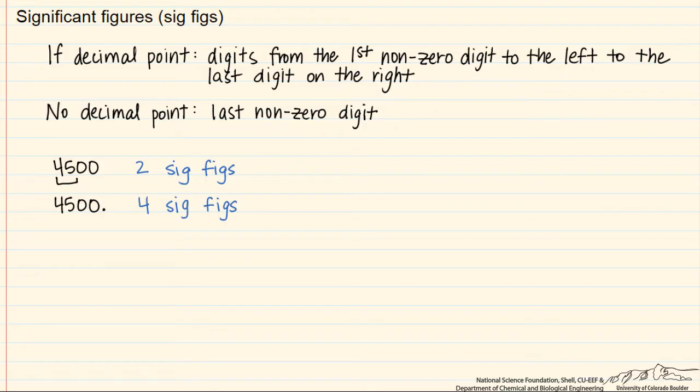Now we write it like this, 0.045. So here we have two significant figures. However, if we put a 0 after that 5, now that 0 becomes a significant figure.